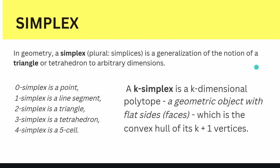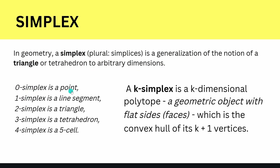What is a simplex? In pure geometry, a simplex is a generalization of the notion of a triangle — or for three dimensions, a tetrahedron — to arbitrary dimensions. A zero-simplex is a point or vertex. A one-simplex is a line segment. A two-simplex is a triangle surface structure. A three-simplex is the classical tetrahedron. A four-simplex is a five-cell. In general, a k-simplex is a k-dimensional polytope — a geometric object with flat faces, which is the convex hull of its k+1 vertices.